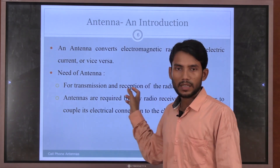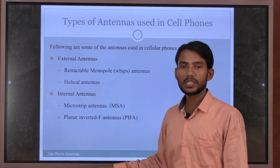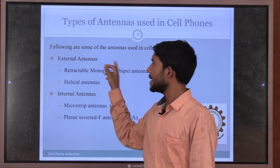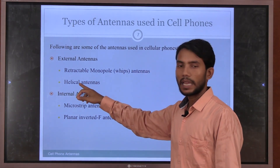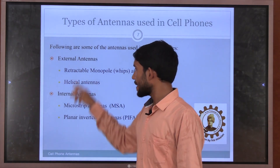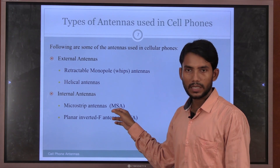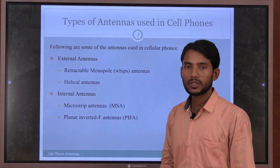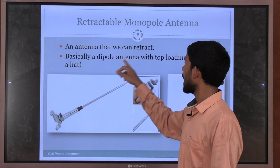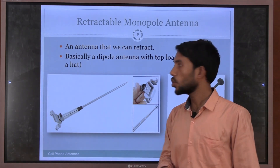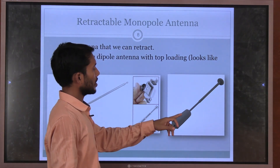There are two types of antennas used in cell phones. First, external antennas: the retractable monopole or whip antenna and the helical antenna. Second, internal antennas: the microstrip patch antenna and the planar inverted-F antenna (PIFA). The retractable monopole antenna can be retracted — it is basically a dipole antenna with a top that looks like a hat, used in early smartphones.